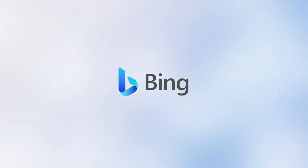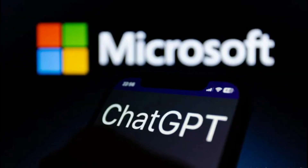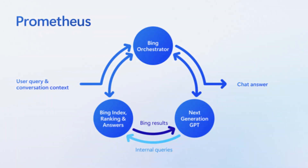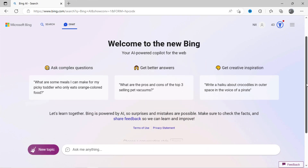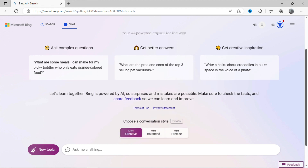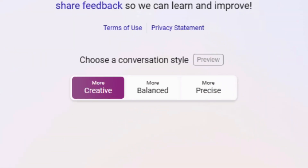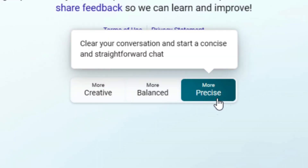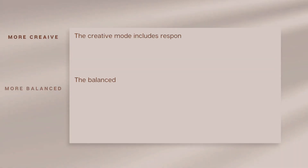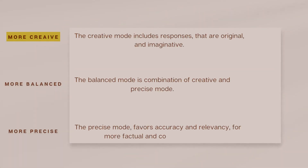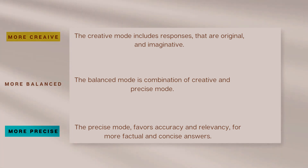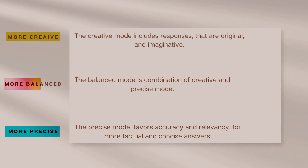As you know, Microsoft has launched Bing Chat based on GPT-4 model by OpenAI. Bing has three modes of responses. These three modes are creative, balanced, and precise. The creative mode includes responses that are original and imaginative, whereas the precise mode favors accuracy and relevancy for more factual and concise answers. The balanced mode is a combination of creative and precise mode.